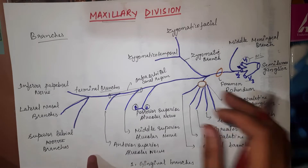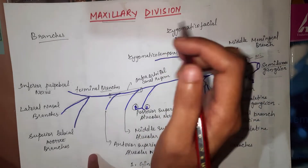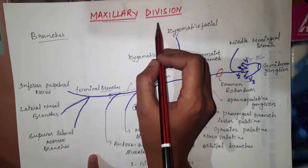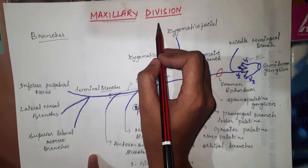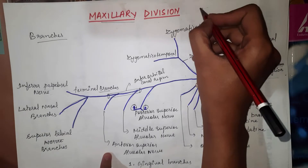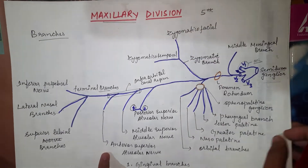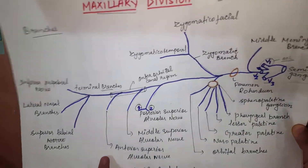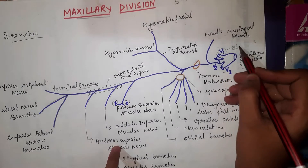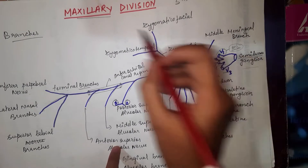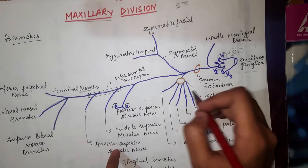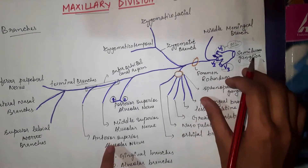Hello everyone, today we are going to discuss the maxillary division. The maxillary division is the second branch of the trigeminal nerve, which is the fifth cranial nerve. The trigeminal nerve has three divisions: the first is called the ophthalmic division, the second is the maxillary division, and the third is the mandibular division.